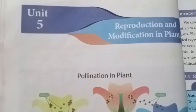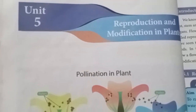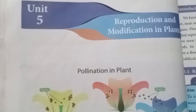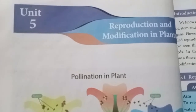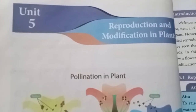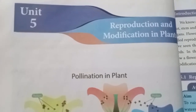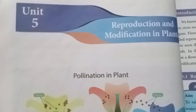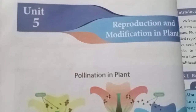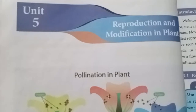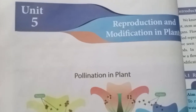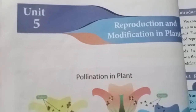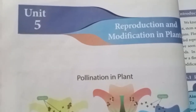Before going to the evaluations, some points about this lesson. This lesson deals about the types of reproduction in plants and the modifications occurring in plants. There are two types of reproduction in plants: one is asexual reproduction and another one is sexual reproduction.